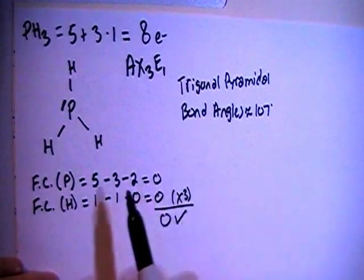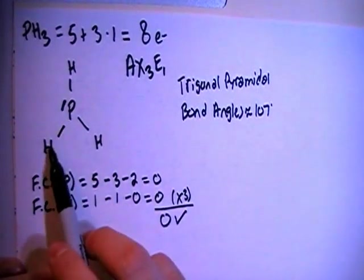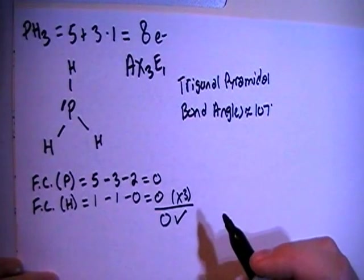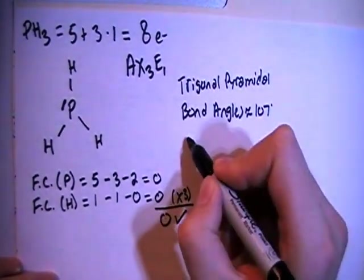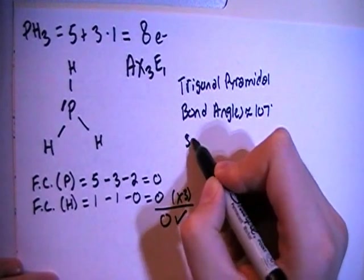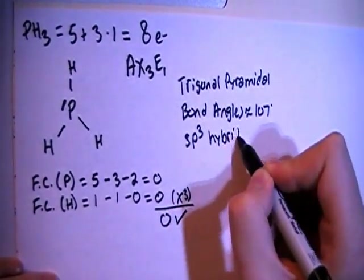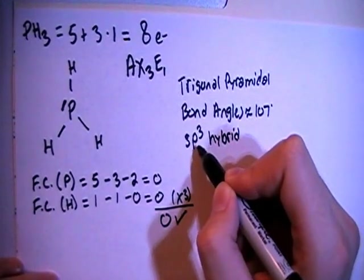In terms of hybridization, looking at the central phosphorus, there's 1, 2, 3, 4 electron groups, or 4 potential bonding sites. So we need 4 hybrid orbitals, so we're going to go with SP3 hybrid, 1 S and 3 P's. That's a total of 4.